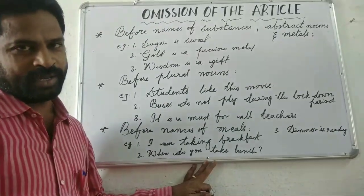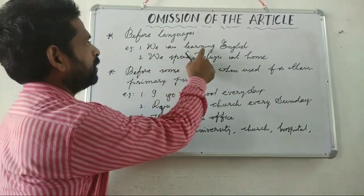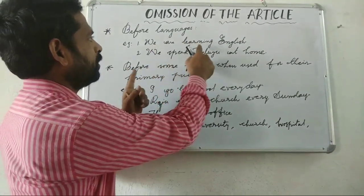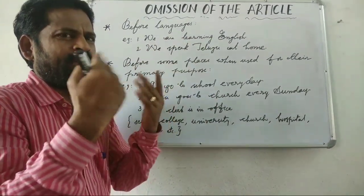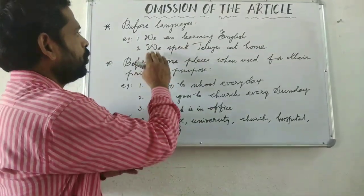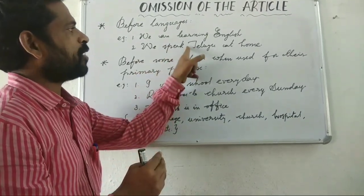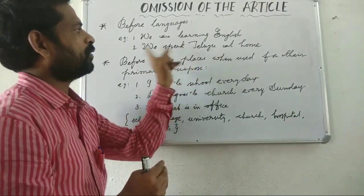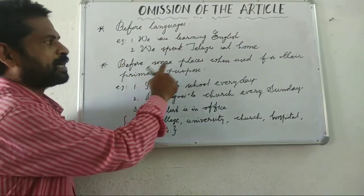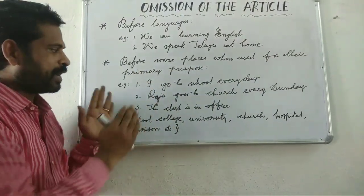Before languages: 'We are learning English' — remember, we are learning English, not 'the English'. We speak without article: 'We speak Telugu.' You have to say language names without any article in front of them.